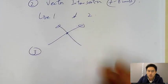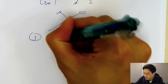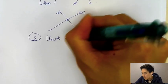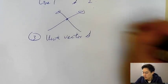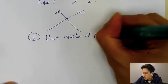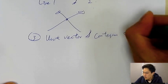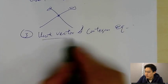The third question type would be unit vector and Cartesian equation. So what does it mean by unit vector?